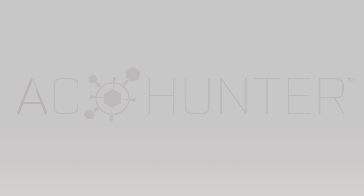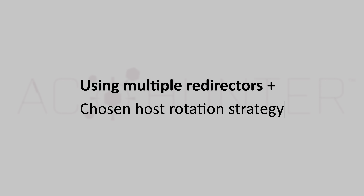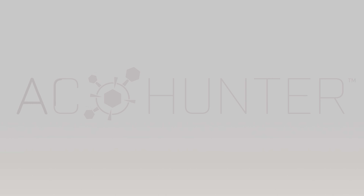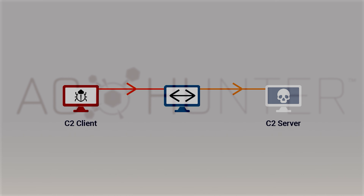In addition to the two core properties of delay and jitter, let's explore one more dimension: the use of multiple redirectors and a chosen rotation strategy. So far we've discussed C2 as implying a direct connection between client and server. In practice, especially with more advanced adversaries, the C2 client often first connects outbound to a redirector before being passed to the C2 server. Similarly, when the server responds, it first connects to the redirector, which completes the loop back to the client. This is essentially a proxy — in the C2 context, often called a redirector.